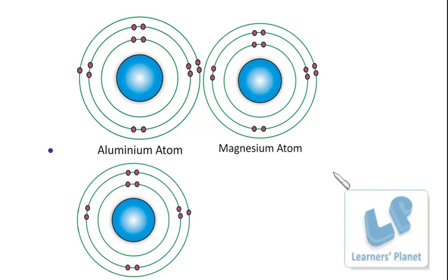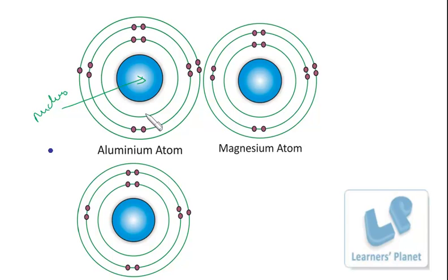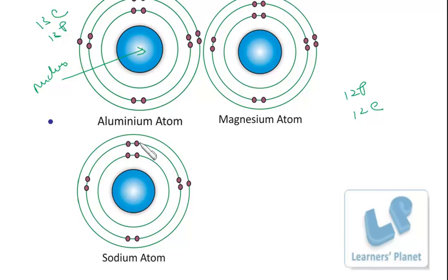I have taken a few examples here — aluminium atom, magnesium atom, and sodium atom. You can see the nucleus in the center and the electrons arranged around it. In aluminium, counting all the electrons gives 13, meaning 13 protons and 13 electrons. In magnesium, there are 12 protons and 12 electrons. In the sodium atom, there are 11 protons and 11 electrons. The electrons are moving around the nucleus.